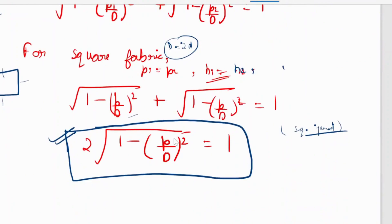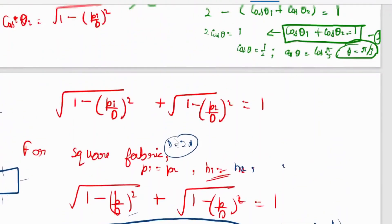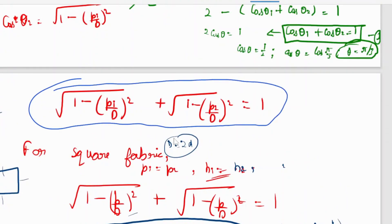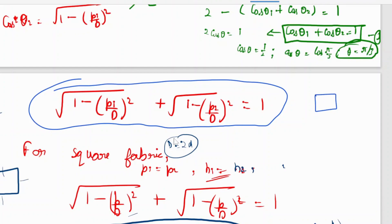For a square fabric, the equation is 2√(1 - p/d)² = 1, since both sides are jammed. If it is not both sides jammed, the equation becomes (1 - p/d)² + p2/d = 1. In a square fabric, everything is equal: p1 = p2, h1 = h2, and d1 = d2.